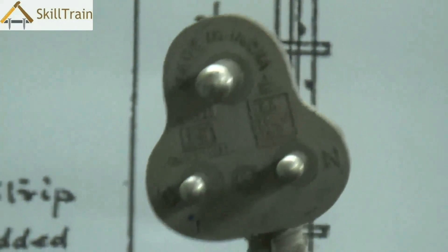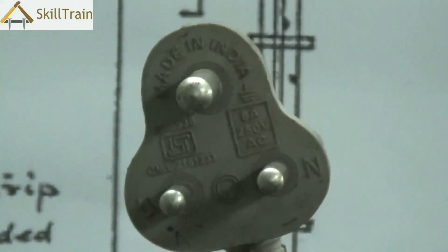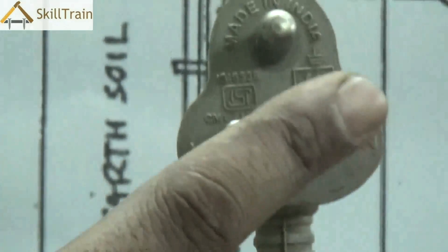Why do we need this earthing? Many a times if there is leakage of current, the current could spread to the body of the equipment and when you touch the body of the equipment you will feel a slight shock there.